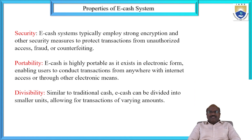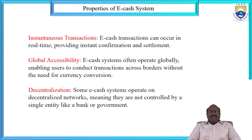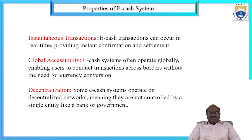These properties — security, portability, and divisibility — are very helpful from the e-cash systems. Divisibility means traditional e-cash systems can be divided into smaller units, allowing transactions of varying amounts. Each transaction can occur in real time, providing instant confirmations and settlement. That type of technique is called instantaneous transaction, which is also one of the powerful properties of the e-cash systems.